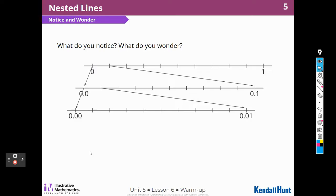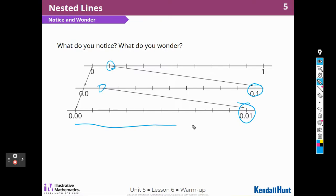What do you notice? What do you wonder? Well, I notice that there are three number lines, and each number line looks like it comes out of the one above it. This looks like it comes out of right here, and this number comes out of right there. I'm wondering if we're going to use these number lines. Can I keep going and put more number lines in between? Can I do another one here and go to 0.01? I wonder if that works. And what numbers go on the tick marks? I wonder that as well.